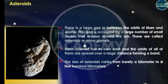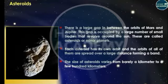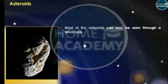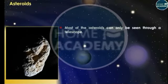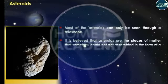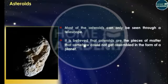The size of asteroids varies from barely a kilometer to a few hundred kilometers. Most of the asteroids can only be seen through a telescope. It is believed that asteroids are the pieces of matter that somehow could not get assembled in the form of a planet.